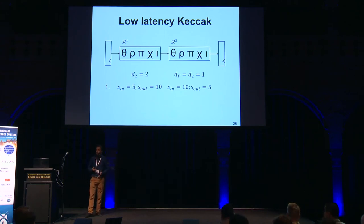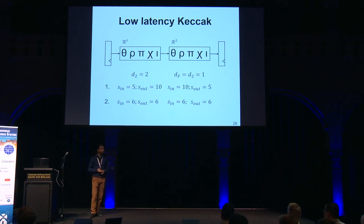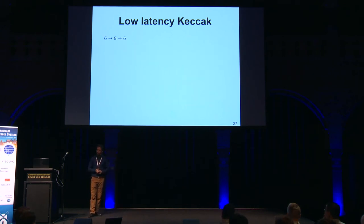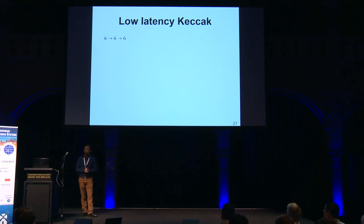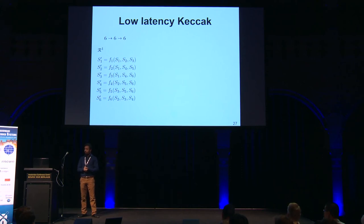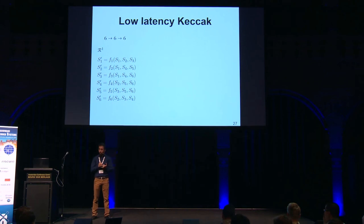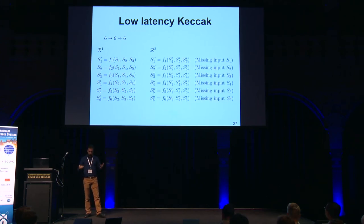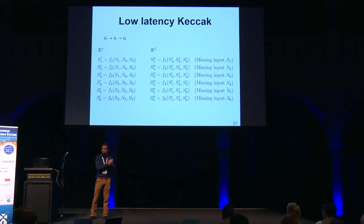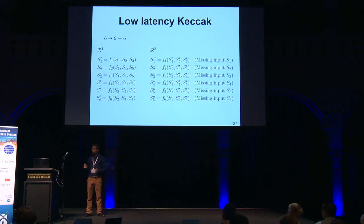That 5-to-10 approach was not very optimal due to the large number of shares involved. So we found a 6-to-6 sharing scheme applicable to both layers. In the first layer, every output uses three input shares as shown in the slide. The second layer uses three input shares in the same way — in this case the outputs of the first layer. With this, every output share at the final output of the second layer is missing at least one input share, satisfying non-completeness.